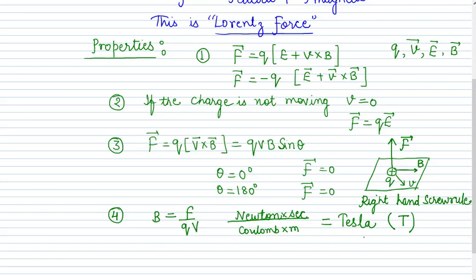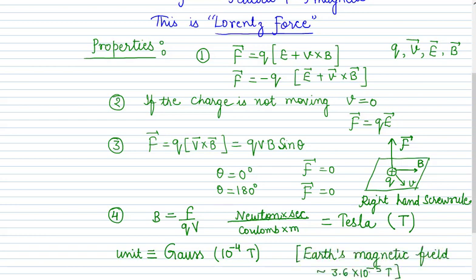Since Tesla is a very large unit, the more common unit for measuring magnetic field is Gauss, named after a different scientist. If you want to write Gauss in terms of Tesla: one Gauss is equal to ten to the power minus four Tesla. To understand how big a Tesla is, the Earth's magnetic field is approximately 3.6 into ten to the power minus five Tesla - that is why we commonly use Gauss.